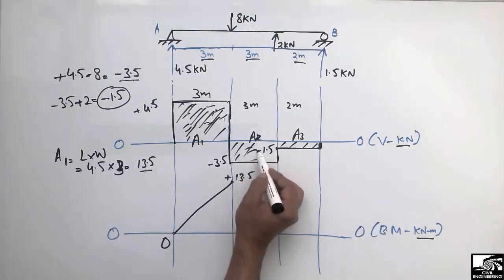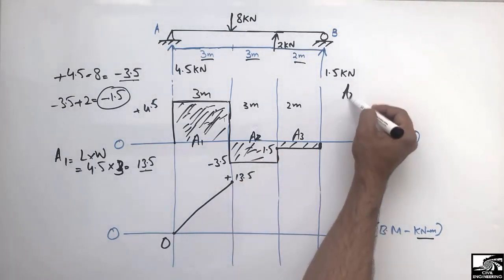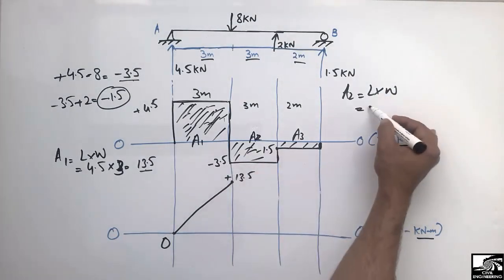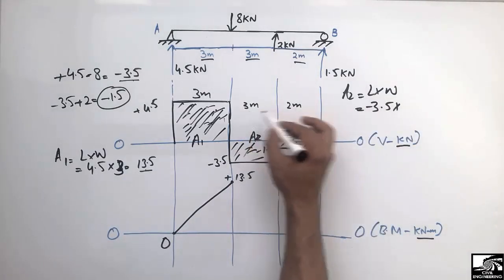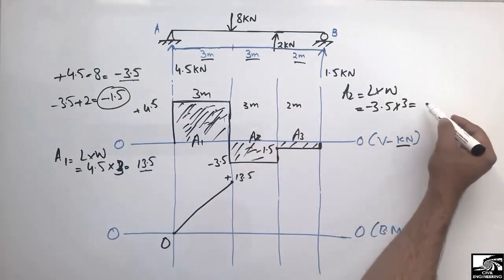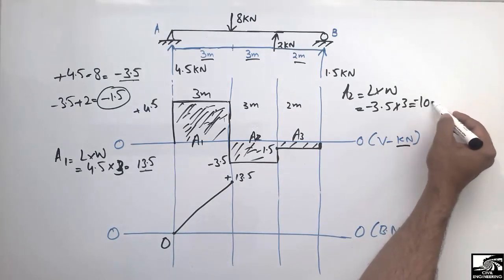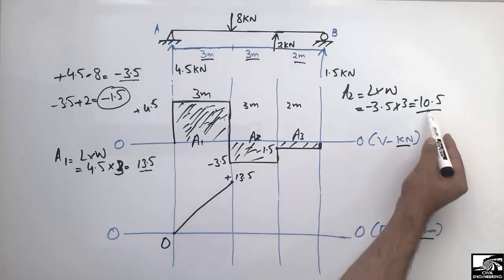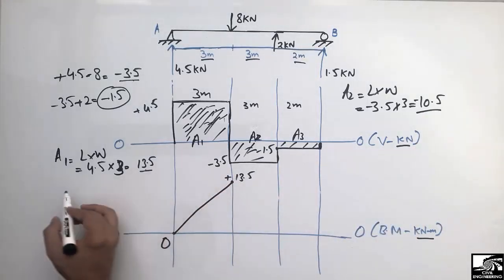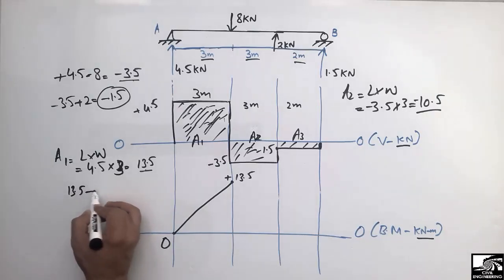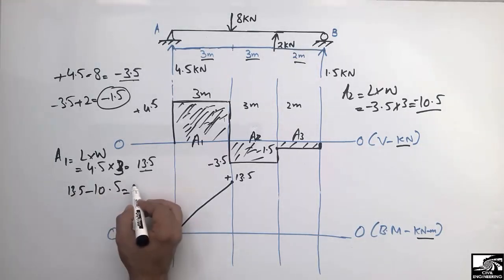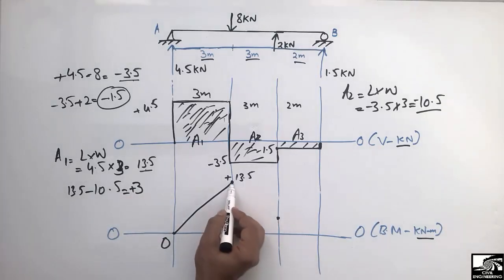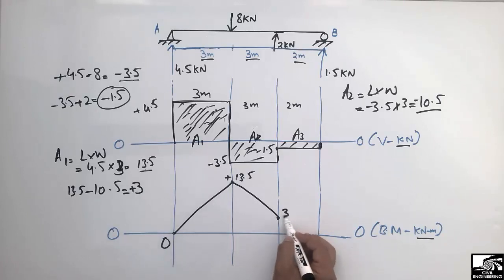For block A2: the area is 3.5 times 3, giving 10.5 kNm, but it is negative because this shear force block is below the zero-zero line. So we subtract minus 10.5 from plus 13.5: 13.5 minus 10.5 gives plus 3 kNm. We bring the bending moment diagram down to 3 kNm at this point.